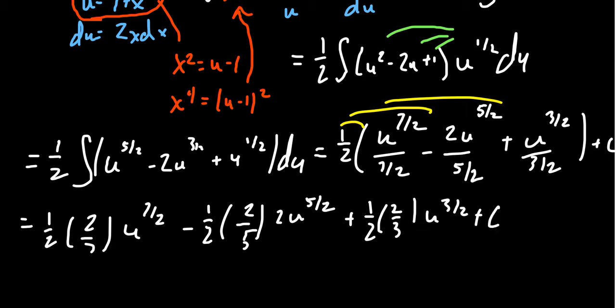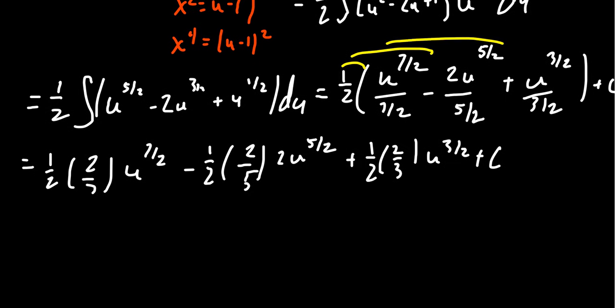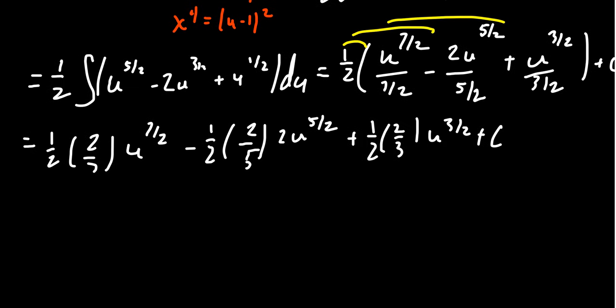And simplify where we can. You'll notice that the one half cancels with a lot of the twos that are in the numerator. So you get all that cancellation right there. And then substitute back in the original expression for u, which it fell off the screen right here. But remember, that was x²+1. So in the end, we have a 1/7 (1+x²)^(7/2).